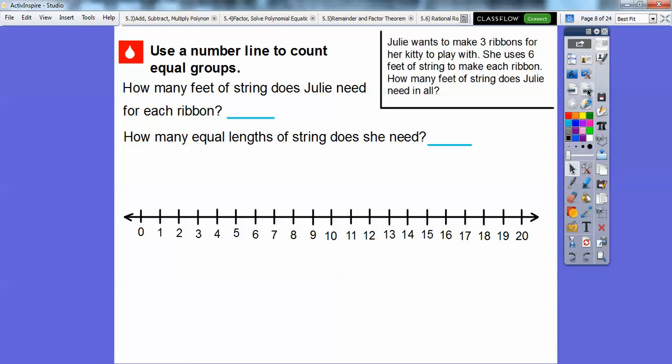So we're going to use a number line to count equal groups. Here's a number line below. And so how many feet of string does Julie need for each ribbon? It said six feet of string for each ribbon. And then how many equal lengths? She's going to do three ribbons right there. So three equal lengths.